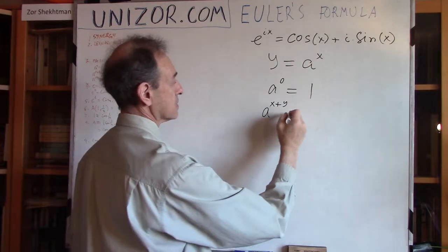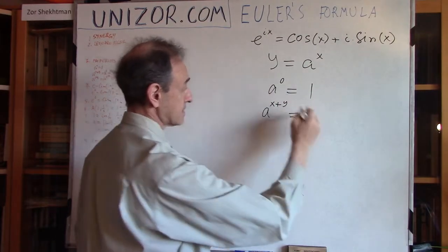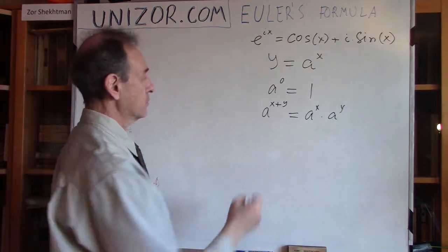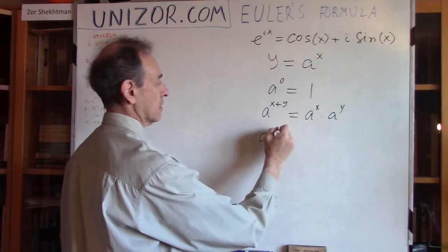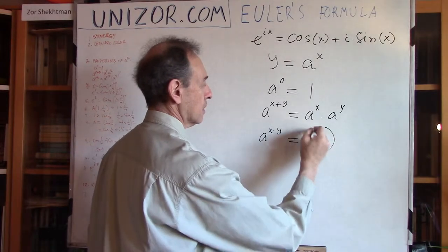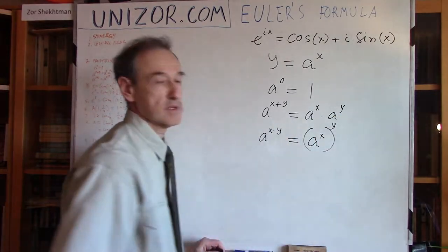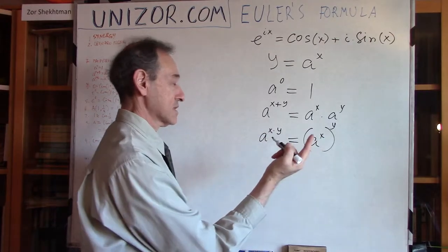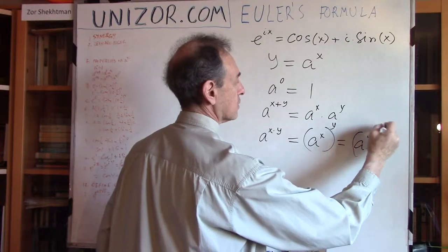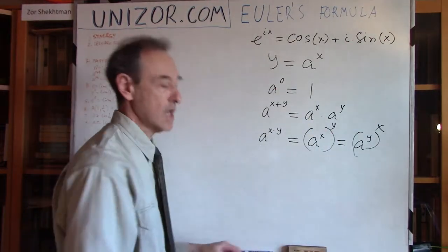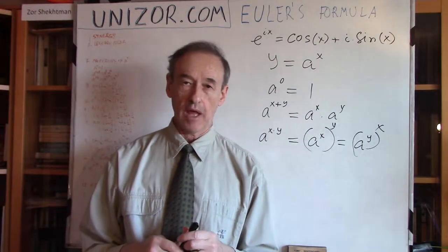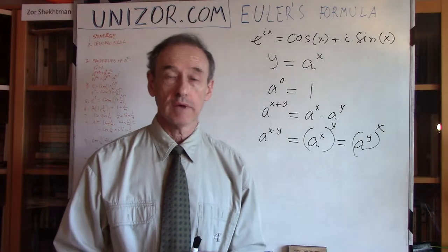A to the power of zero is always equal to one. Also, if you have a sum of two numbers x plus y — talking about real numbers, it's a real function — that's the product of two different exponents. And finally, if you have the product of exponents, that's actually a sequential usage of the power. Since the product is commutative, you can put it as a to the y and then to the x. These are properties which, no matter how I define my complex exponential function, should actually be held.